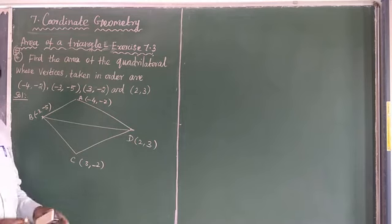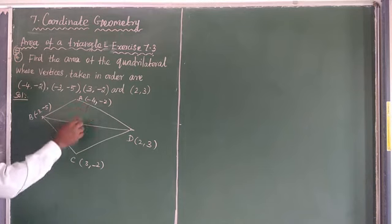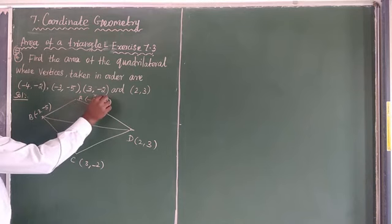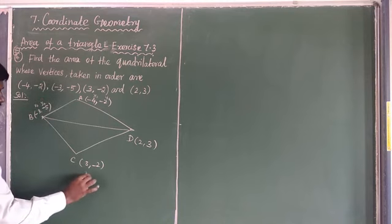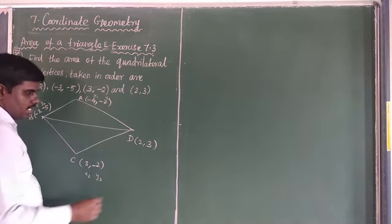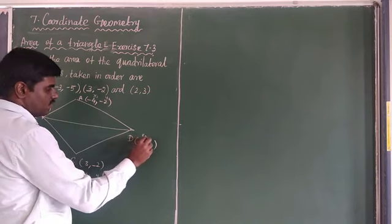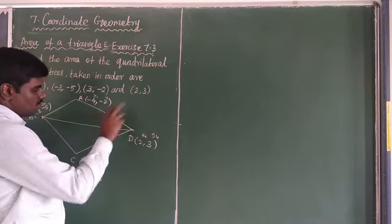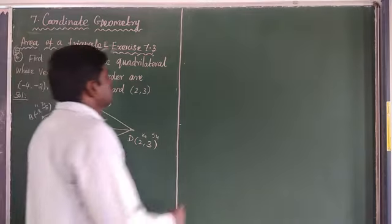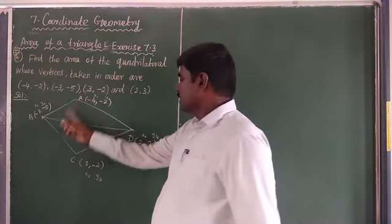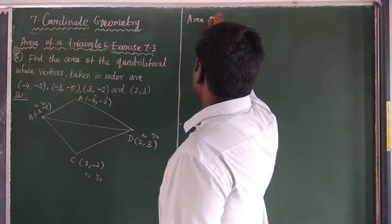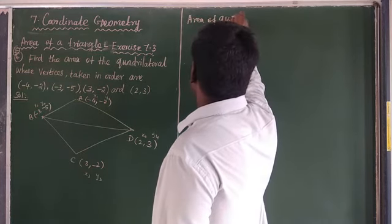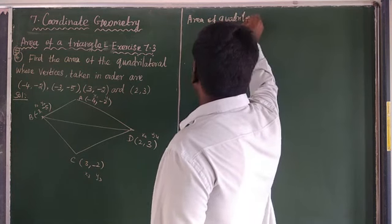Same way, here the coordinate points: x1, y1; x2, y2; x3, y3; and x4, y4. I will choose the 4 coordinate points. I am finding the area of quadrilateral ABCD. Here I find out the area of the quadrilateral.